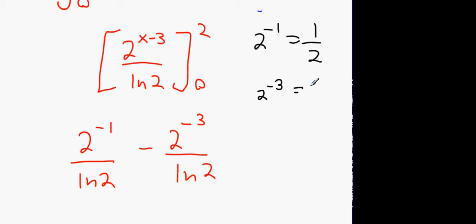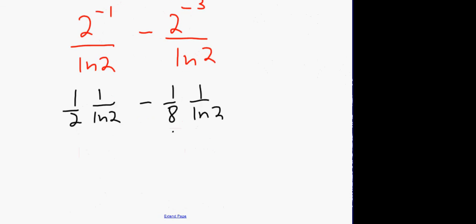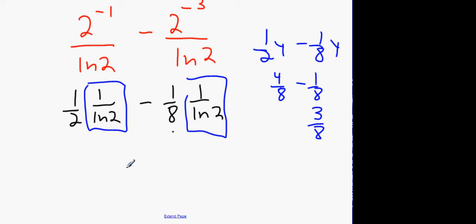Now, this is an interesting one. What is 2 to the power of minus 1? A half. What's 2 to the power of minus 3? An eighth. So, technically, this question becomes a half, 1 over ln 2, minus an eighth, 1 over ln 2. Do you see the way this could be written? See the way these two things are exactly the same? It's nearly the exact same question as a half y minus an eighth y. What is a half y minus an eighth y? It's 4 eighths minus 1 eighth, which is 3 eighths. By this logic, this is 3 eighths, 1 over ln 2, which is 3 over 8 ln 2.